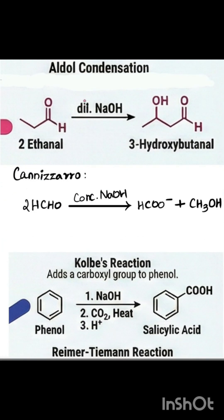The next category is aldol condensation and Cannizzaro reaction. In aldol condensation, it is a combined product — a condensation. After removal of water, it forms an alpha-beta-unsaturated aldehyde or ketone, so alpha-hydrogen is the important condition here. In the Cannizzaro reaction, alpha-hydrogen should not be present. It undergoes a disproportionation reaction where the aldehyde forms carboxylic acid and a primary alcohol.